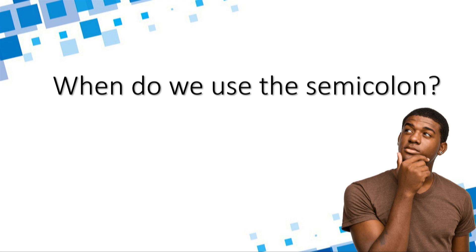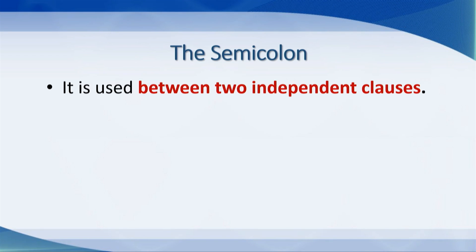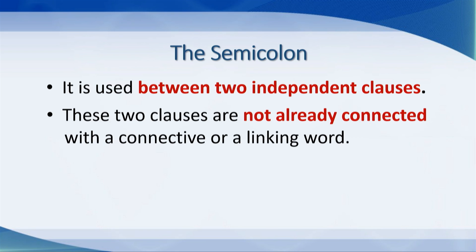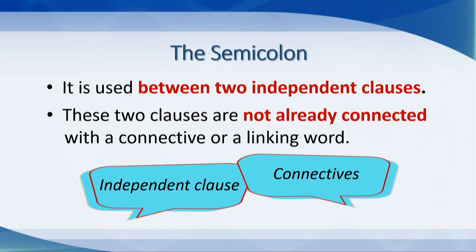So, when do we specifically use the semi-colon? Firstly, we use the semi-colon between two independent clauses. These two clauses are not already connected with a connective or a linking word. Now, do you remember what an independent clause is? And what about connectives? Do you still remember some examples of connectives? Let's have a quick look.